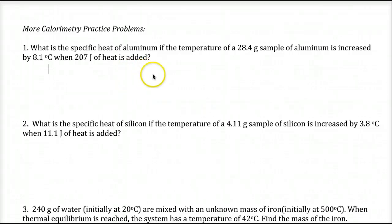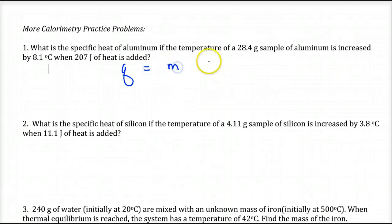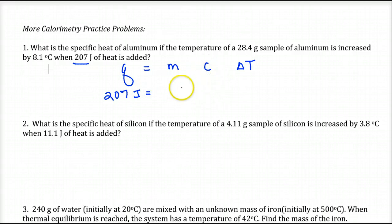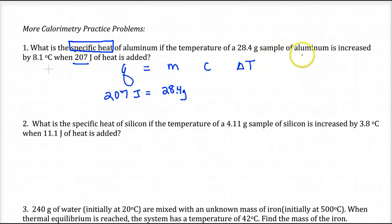So we're looking for the specific heat of aluminum. The temperature of a 28.4 gram sample of aluminum is increased by a certain temperature when that many joules of heat is added. I always begin with my thermal equation: Q is equal to MC delta T. They gave me 207 joules, and that's what they're asking us to find — the specific heat. So plug in what you have: 28.4 grams for mass, and we're left with C as our unknown.